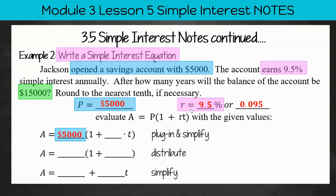So A is equal to 5,000 multiplied by 1 plus 0.095 times T. We're going to simplify that to be 0.095 T multiplied by 5,000. When we distribute the 5,000, we get 5,000 plus 475 T.